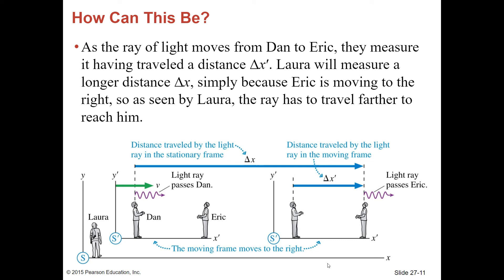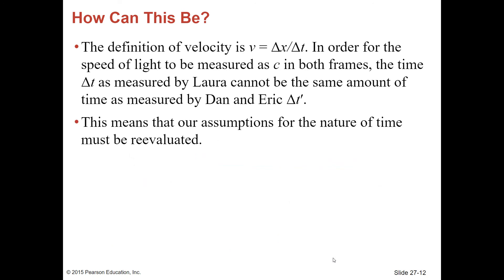As the ray of light moves from Dan to Eric, they measure it having traveled the distance delta X prime. Laura will measure a longer distance delta X simply because Eric is moving to the right. As seen by Laura, the ray has to travel farther to reach him.